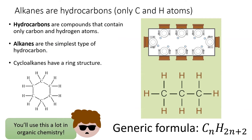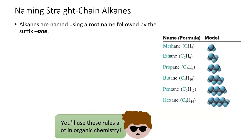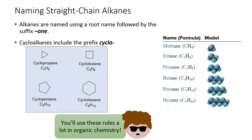Some alkanes form a ring structure; we call those cycloalkanes. Alkanes all end in "-ane" and have different prefixes depending on how many carbon atoms they have. Cycloalkanes include the prefix "cyclo".